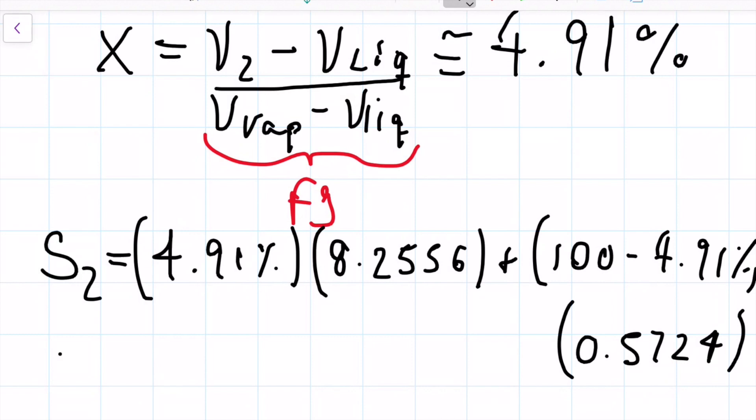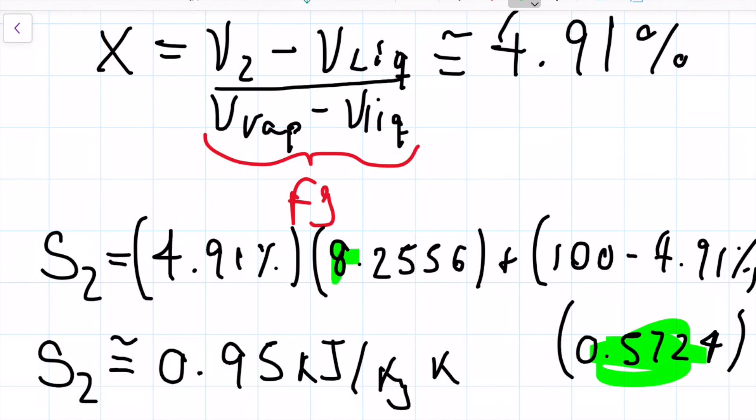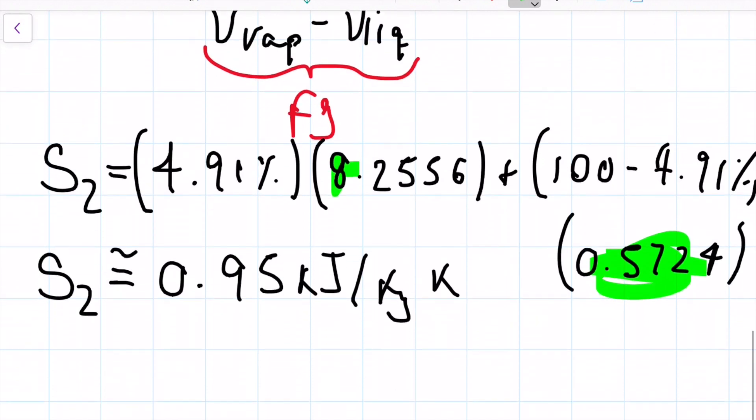And then running those numbers, summing them up, I got approximately 0.95 kilojoules per kilograms Kelvin. So indeed way closer to our 0.5 than to the 8, right, as we would expect.